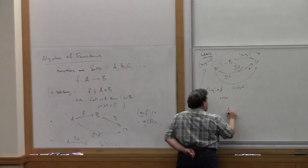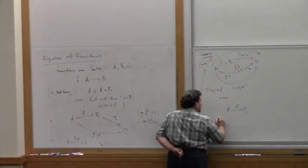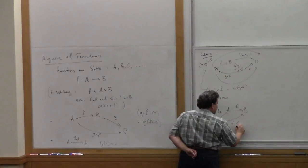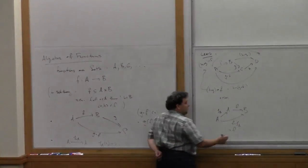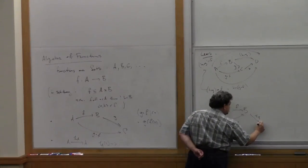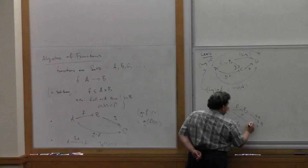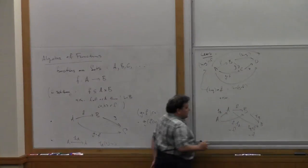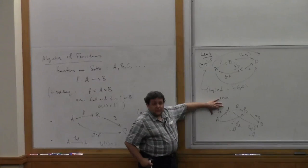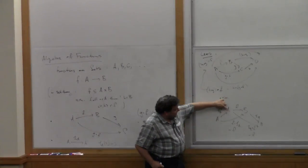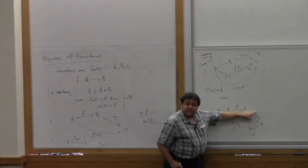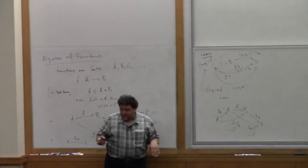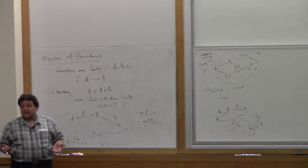The other law is the unit law. If I take F from A to B and the identity on A, then F after 1_A equals F. Similarly, 1_B after F equals F. The identity function doesn't do anything: it takes x to x, and then applying F is the same as just applying F. Those are the basic laws, and that's all the structure of sets we want to use in our definition of a category.